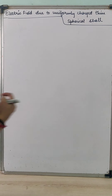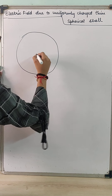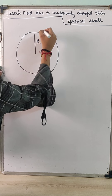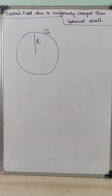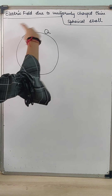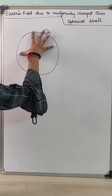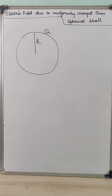To find the electric field, we consider a spherical shell of radius capital R having a charge Q. One important property of this shell is that all the charge resides on its surface. Any excess charge given to the shell resides on the surface, and there is no charge inside the spherical shell.